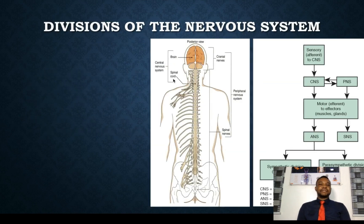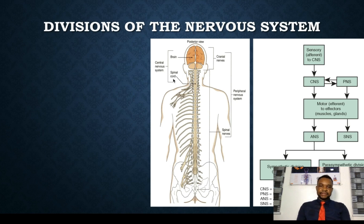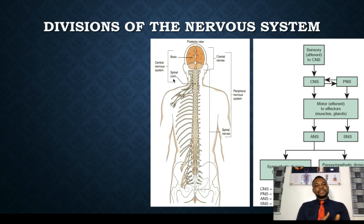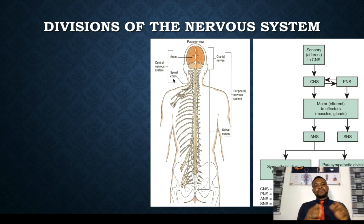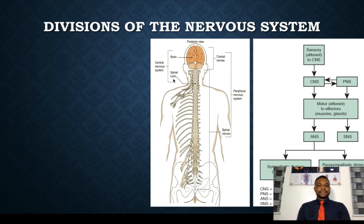Now, divisions of the nervous system. The nervous system is classified into two: the central nervous system and the peripheral nervous system. The central nervous system is made up of the brain and the spinal cord, while the peripheral nervous system is made up of the spinal nerves as well as the cranial nerves. The peripheral nervous system is further divided into two components: the autonomic nervous system and the somatic nervous system.